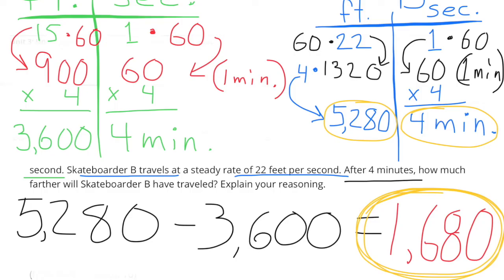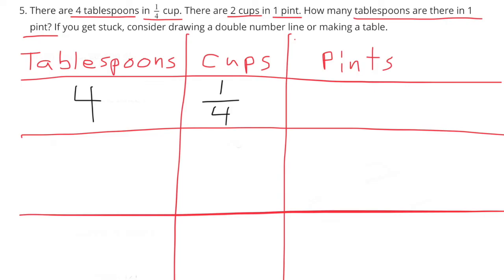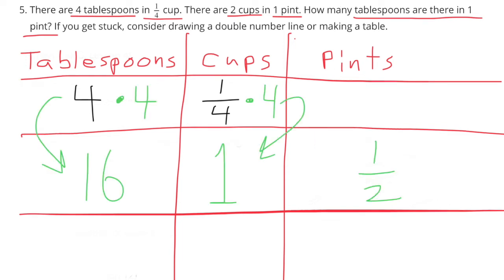Number five: there are four tablespoons in one-fourth cup; there are two cups in one pint. How many tablespoons are there in one pint? I decided to create a table. I put four tablespoons and one-fourth cup. One-fourth cup times four equals four-fourths, or one whole cup, so I need to multiply the tablespoons by four: four times four gets me to 16 tablespoons. So far, one cup is 16 tablespoons.